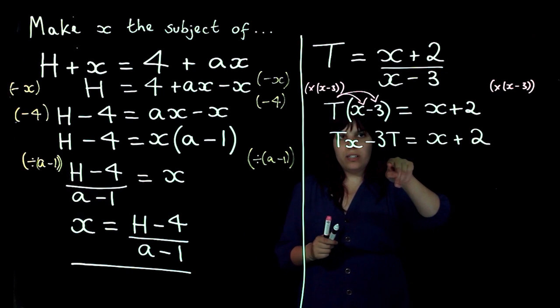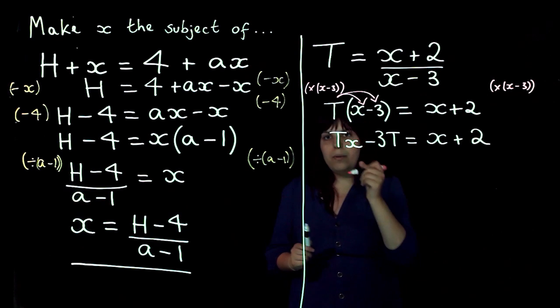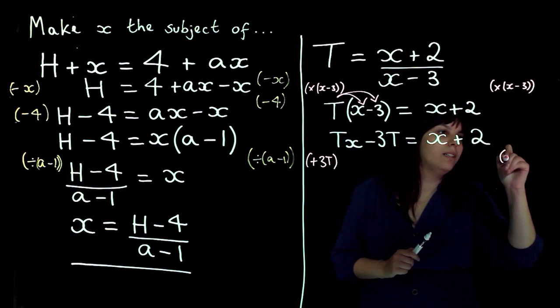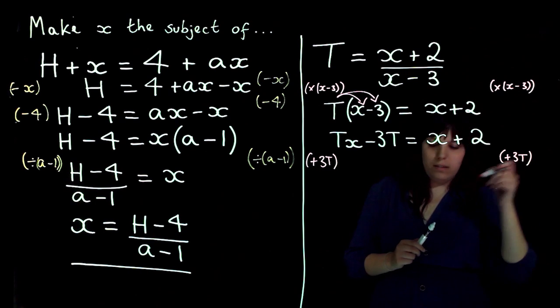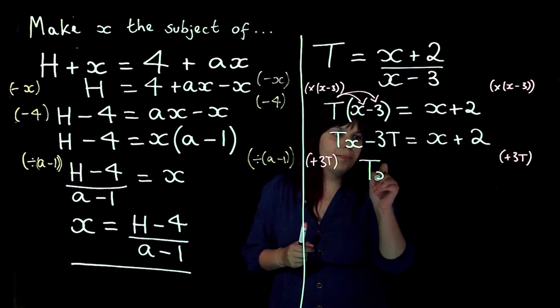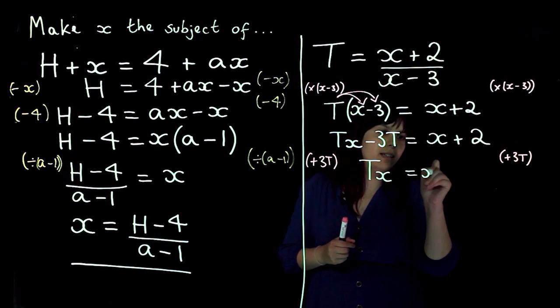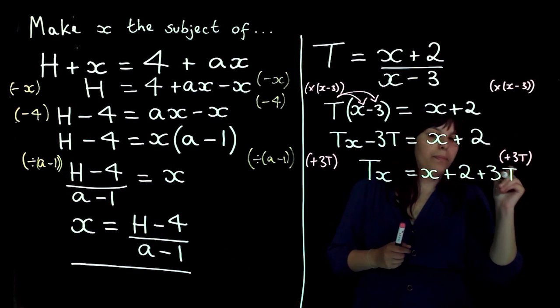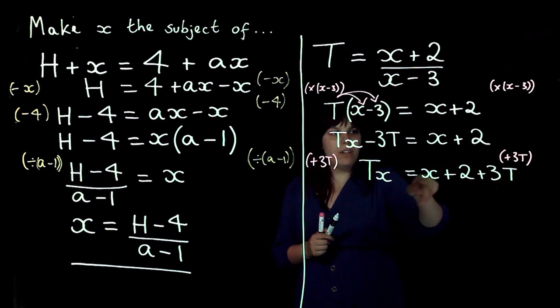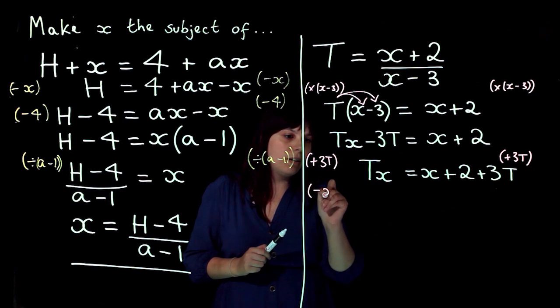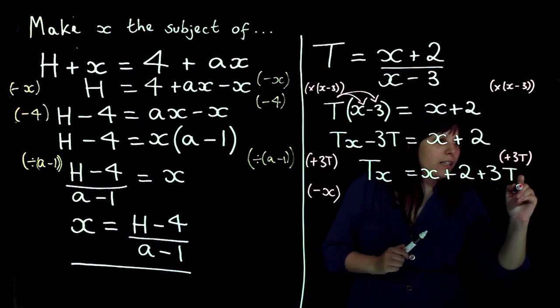So to get rid of minus 3t I'm going to plus 3t and I'm going to do that to both sides. So I end up with tx on this side and on this side x plus 2 plus 3t and then I'm going to get rid of this x on this side. So I'm going to subtract it because it's currently positive.